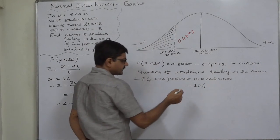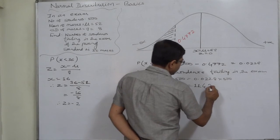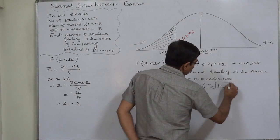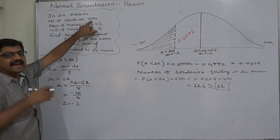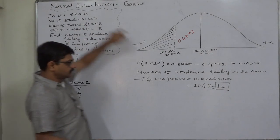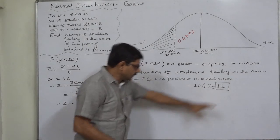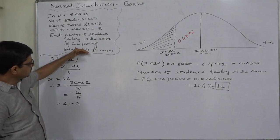Since 0.4 is less than 0.5, we take it as 11 only. Out of 500, there are only 11 students failing in the examination if the passing standard is 36.